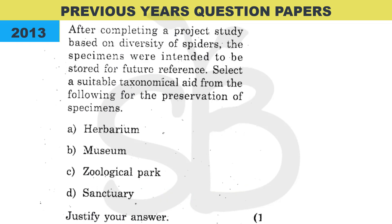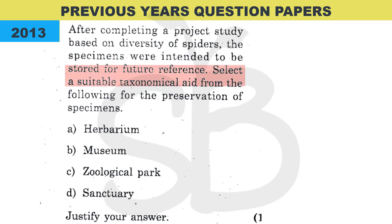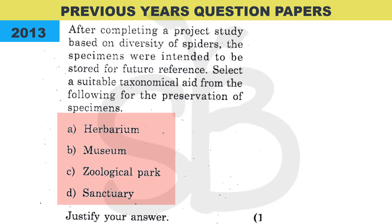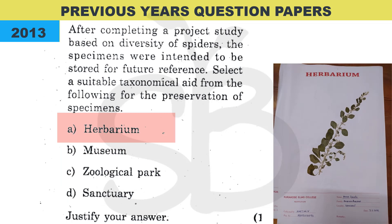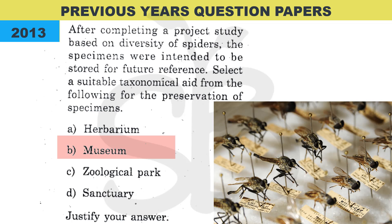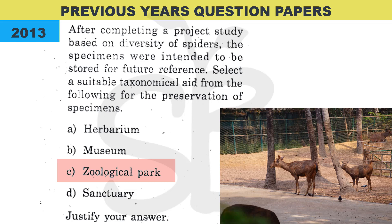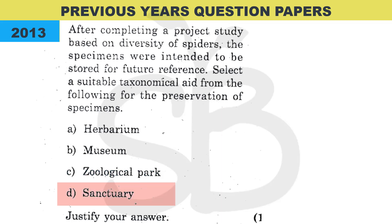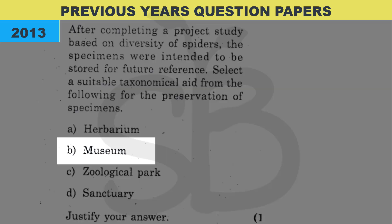Next question: 'After completing a project study based on diversity of spiders, the specimens were intended to be stored for future reference. Select a suitable taxonomical aid for the preservation of specimens.' Since the specimens need to be preserved for future study, the correct answer is Option B — Museum.